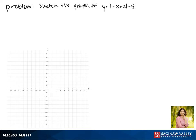Today we'll be graphing the function y equals the absolute value of negative x plus 2 minus 5. We'll start by getting x by itself inside of the absolute value. This gives us y equals the absolute value of the negative of x minus 2 minus 5.